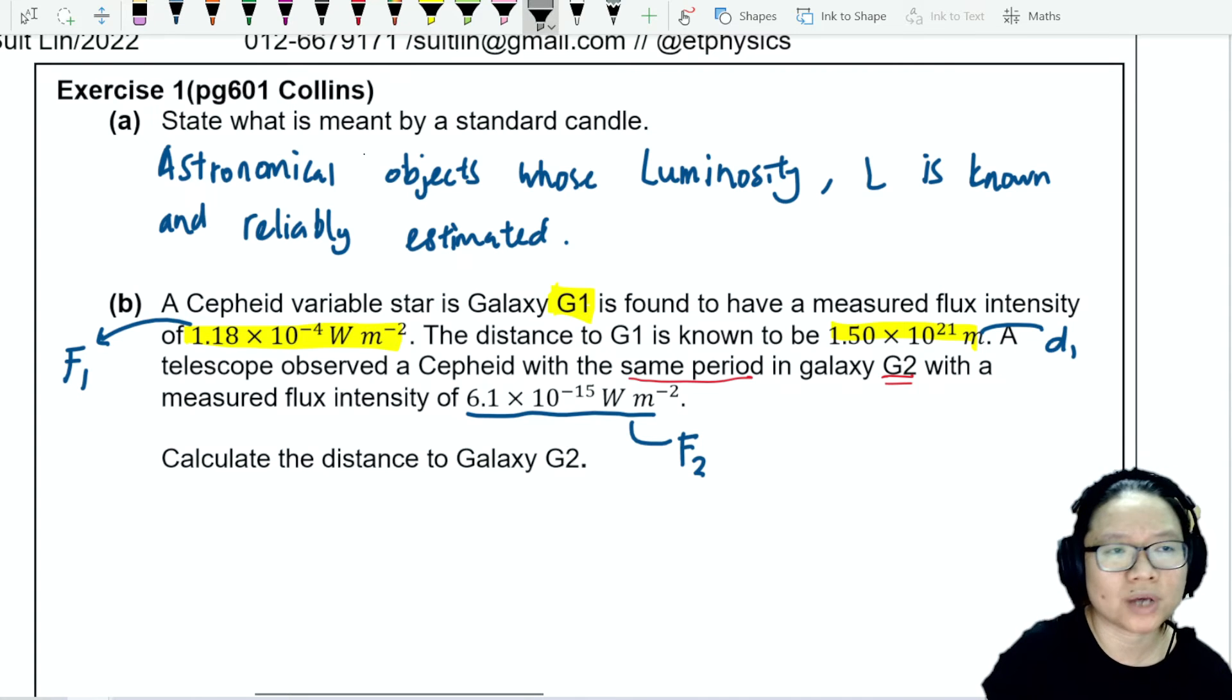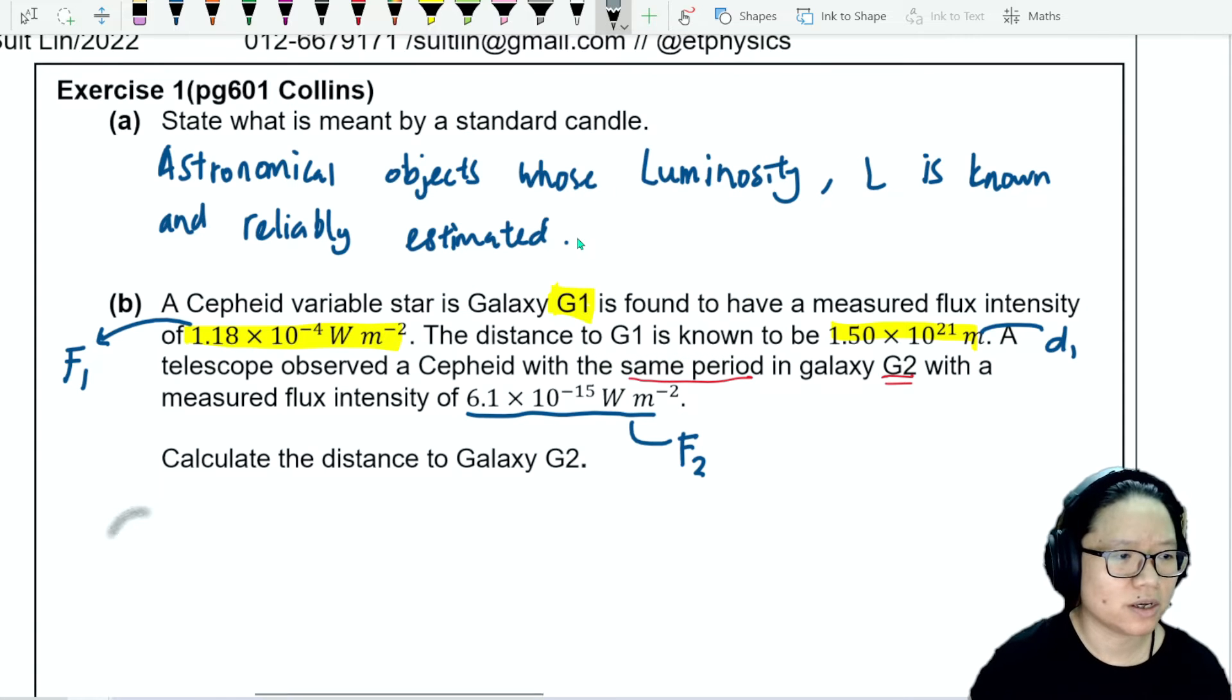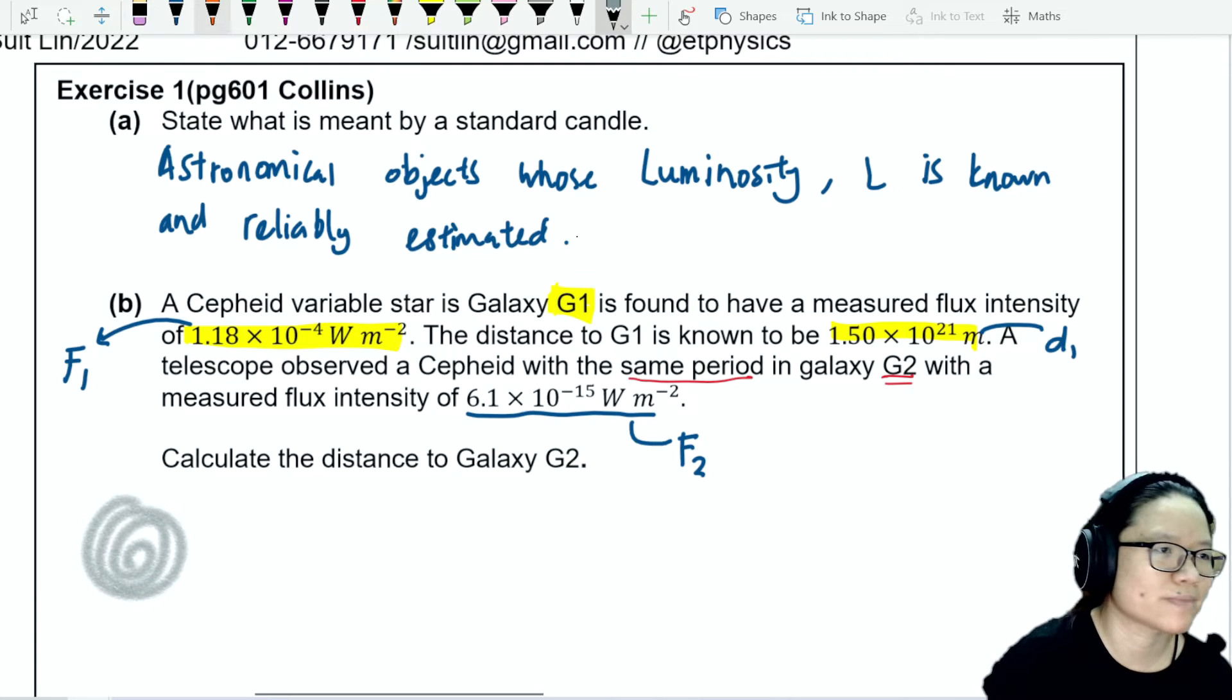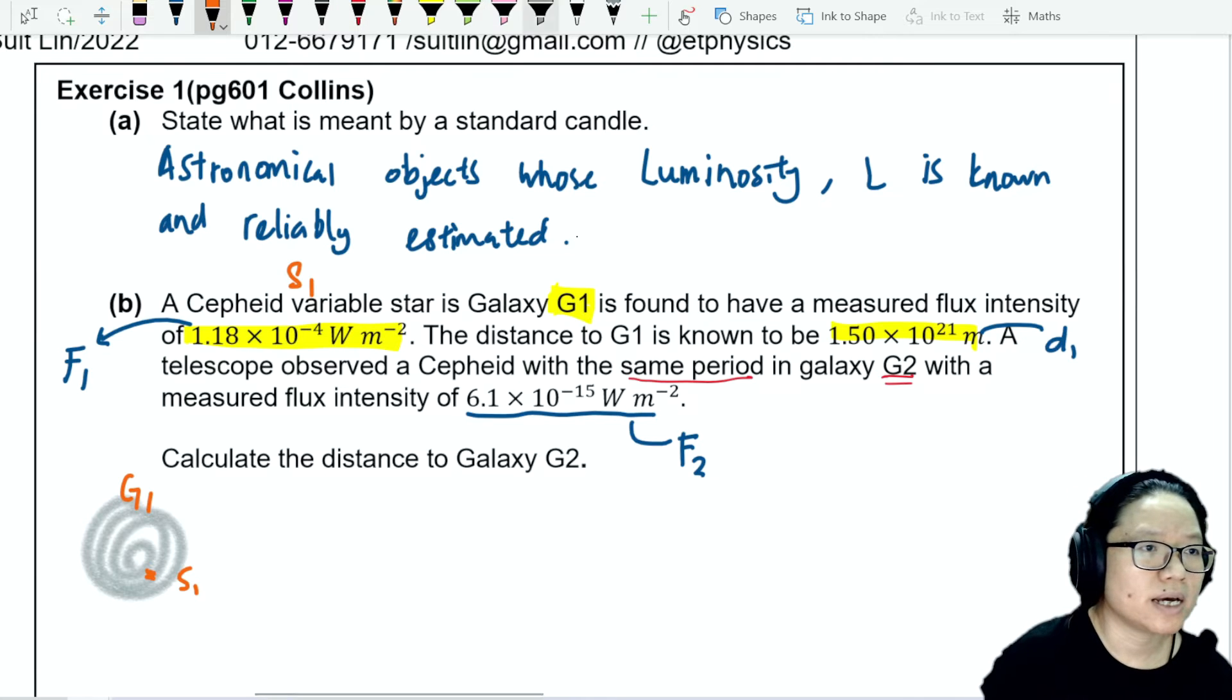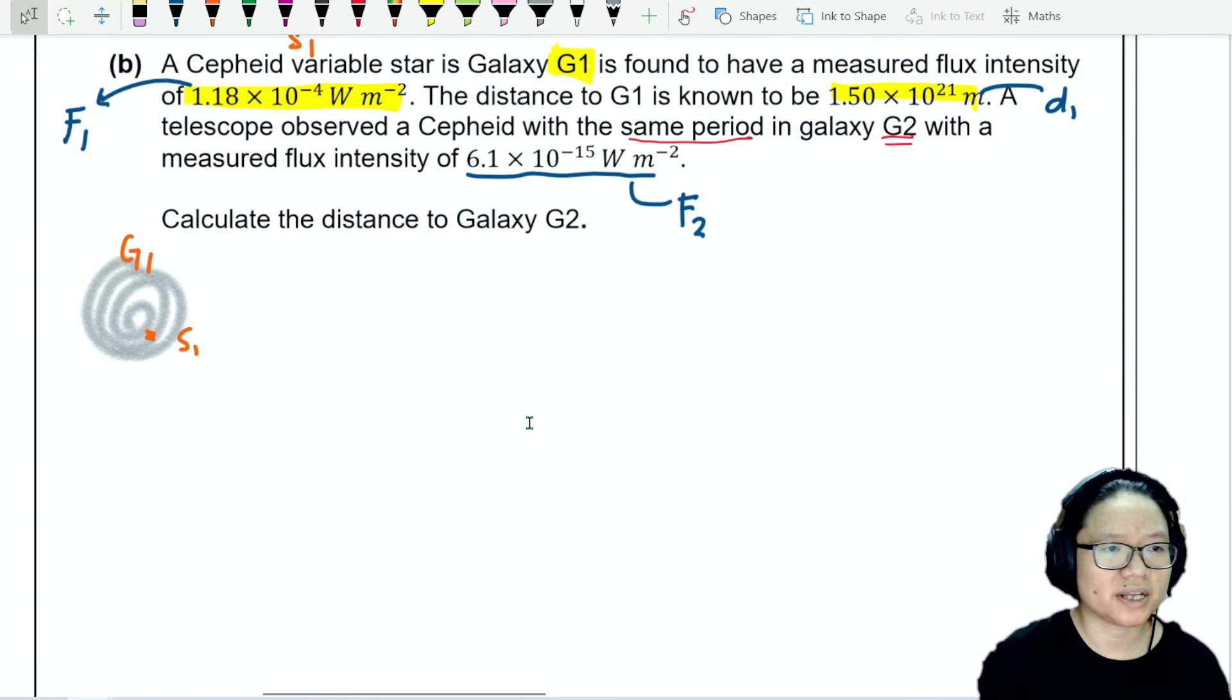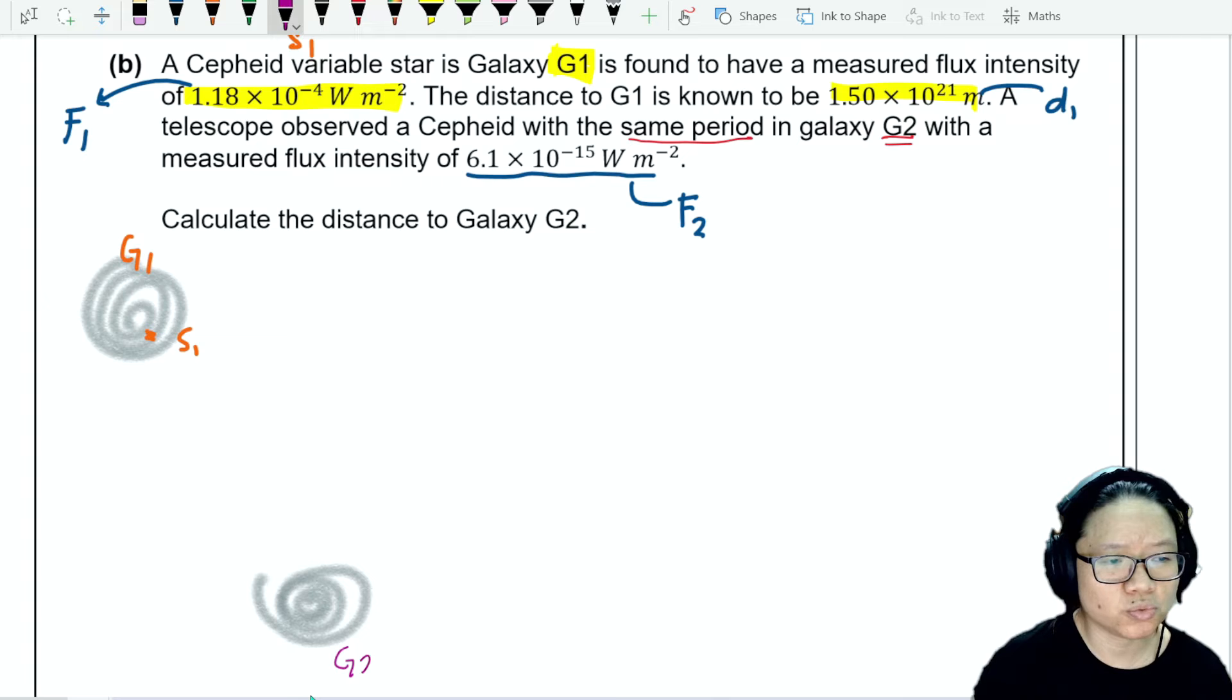This is a Cepheid variable. So basically, what we are mentioning here is, let me try to draw a galaxy. Let's say this is G1. There are many types of galaxies. Maybe I draw a spiral galaxy. We don't know a lot of information about the galaxy. But inside the galaxy G1, there's a Cepheid variable star. Let's say I call this star S1. And inside another galaxy, I don't know where the other galaxy is. I'm going to draw another galaxy here. Maybe this galaxy is here. It's like a cluster of stars. And let's say this is G2. And there's another star that I observe in G2, let's say S2.